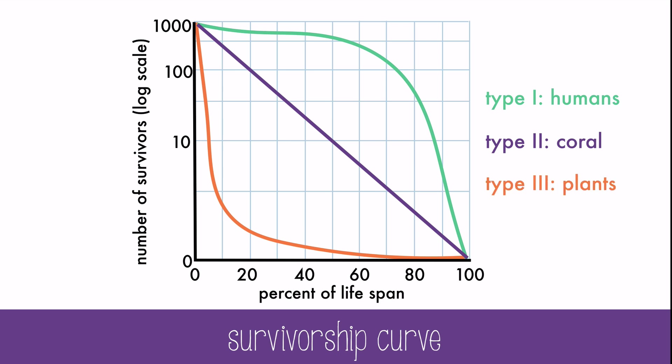Plants make lots of seeds, but very few of them will actually make it into adulthood. Each of these types of survivorship have their benefits and their drawbacks. For example, humans have high survivorship, but they don't make as many offspring.